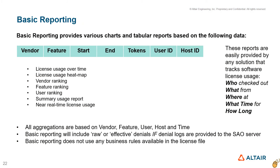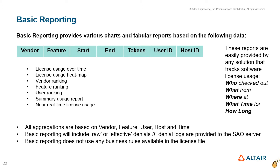Just about any system dealing with license tracking provides a set of basic reports, such as usage over time, aggregations over vendor, feature, user, summary usage reports, and real-time license usage reports. Basic reports use the fundamental data record showing who checked out what software, from which host, at what time, and for how long.